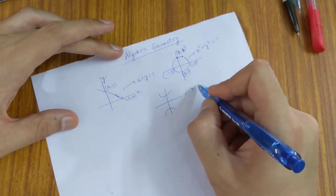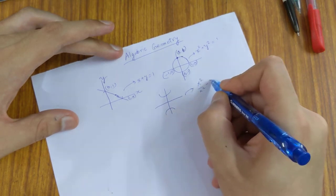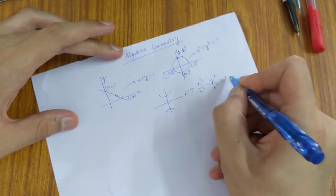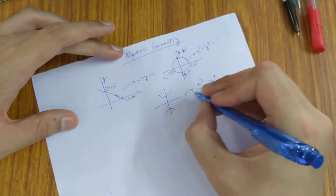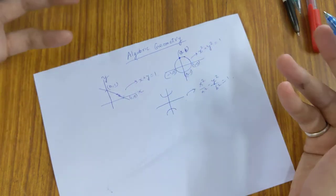represented as x²/a² - y²/b² = 1. So basically, we represent all these geometric figures in the form of algebraic equations and we perform operations on them.